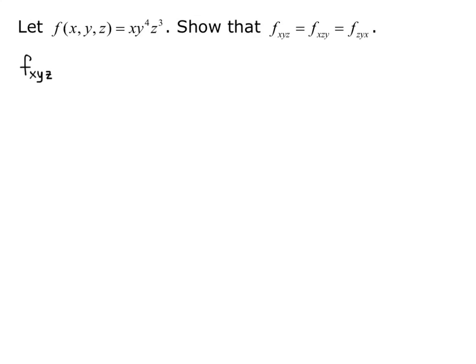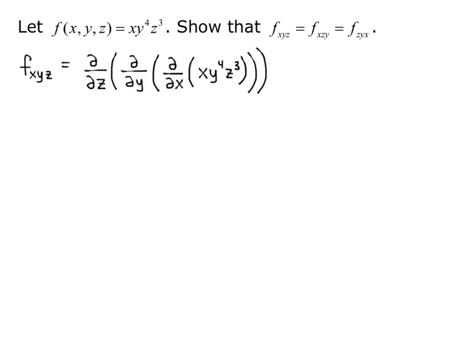We'll start with f_xyz. Remember, we take the derivative with respect to the variable closest to our function first. So we're going to do x first, then take that result and differentiate with respect to y, then take that result and differentiate with respect to z. So this is the partial derivative with respect to z of the partial with respect to y of the partial with respect to x of xy⁴z³.